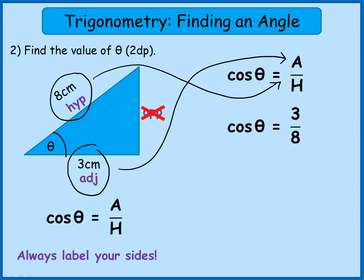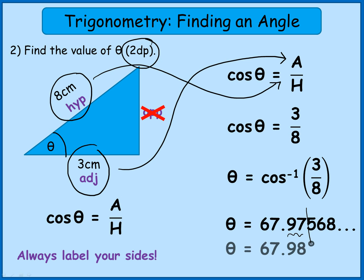So I ask my calculator to reverse the cos function, so we're going to use cos minus 1. It should be above your cos button in yellow or orange, so you're going to press cos minus 1, 3 over 8. That should give you probably a horrible decimal. Well it's no good writing the whole of that down, so we need to try and round that. Now if we look at the top here it says to 2 decimal places. So that means I will need 2 numbers after the decimal point. So that will round up to 67.98.